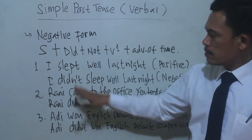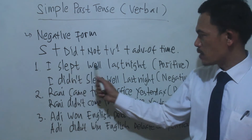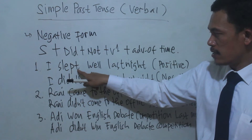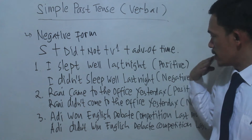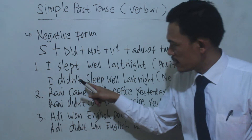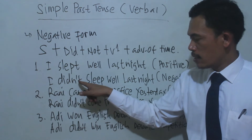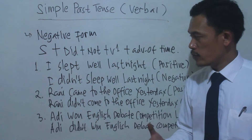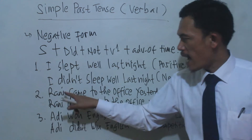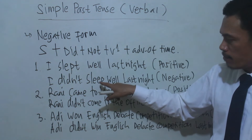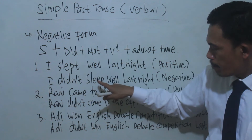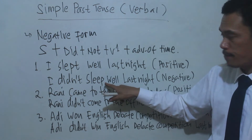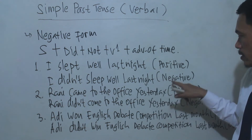Remember to use 'did' as a helping verb, and the main verb returns to verb 1 (infinitive). For example: 'I slept well last night' is positive. 'Slept' is verb 2. When changed to negative, it becomes 'I didn't sleep well last night.' Notice that 'slept' goes back to 'sleep' because 'did' already marks the past tense.